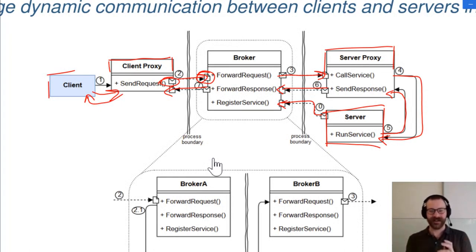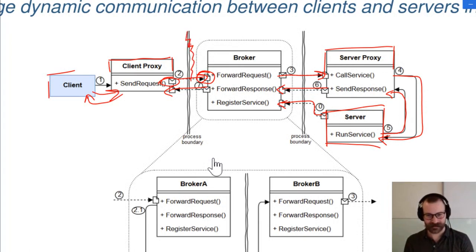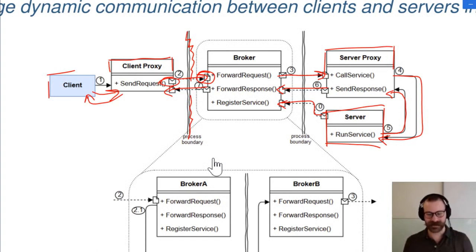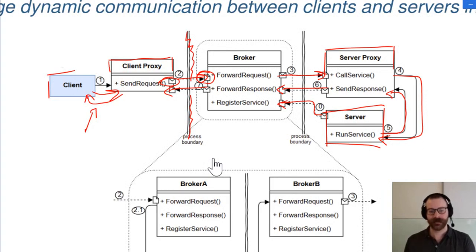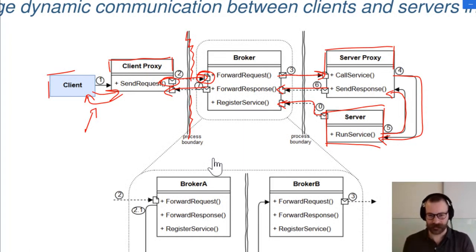The cool thing here is that the client may not even recognize that this went over the network. The wobbly lines in the depiction represent process boundaries — either another process, another PC in our network, or on the other side of the earth. Maybe this went around the whole globe via the internet. This part could either be synchronous or asynchronous: the client waits until the client proxy returns the result, or it's split into two methods — first send request, then get response. But this is a design decision.